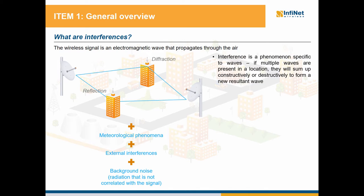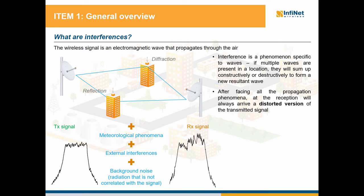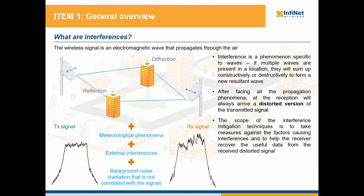Interference is a phenomenon specific to waves, and the basic concept behind it is that if multiple waves are present in a location they will sum up together constructively or destructively, creating a new distorted resulted signal. Therefore, if we generate a good looking signal like we see on the transmitter side, after being exposed to the propagation channel it will reach the receiver as a distorted version. The scope of the interference mitigation techniques is to take measures against the factors causing interferences and to help the receiver recover the useful data from this distorted received signal.